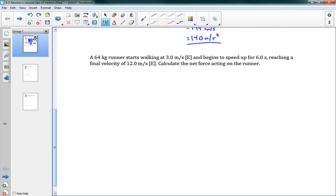Let's do another problem here. A 64 kilogram runner starts walking at 3 meters per second, and then begins to speed up for 6 seconds, reaching a final velocity of 12. Calculate the net force acting on the runner. Well, F net equals ma. That's what we're trying to find. First, we need to get the acceleration. A.